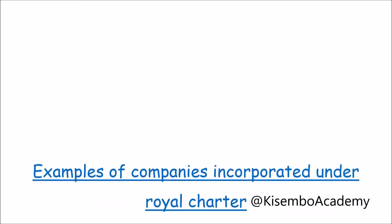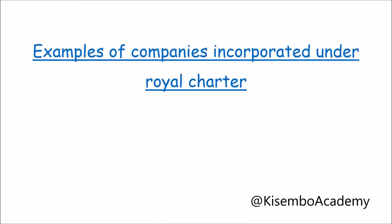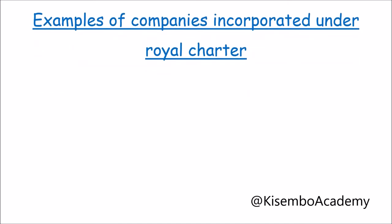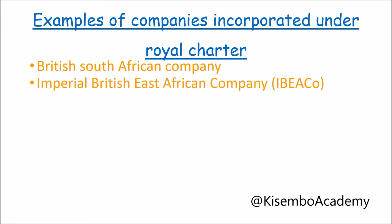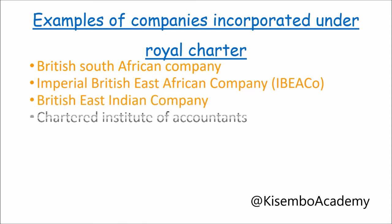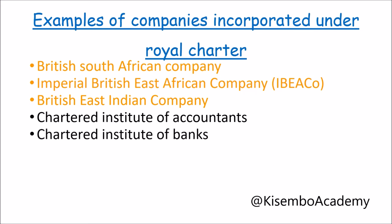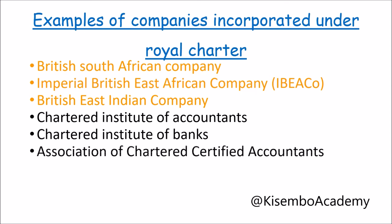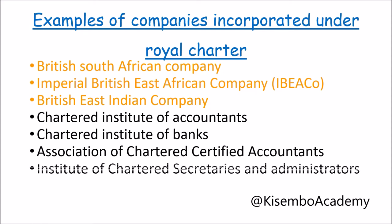Companies incorporated under the special or royal charter are companies, most of which existed in the United Kingdom under the permission of the Queen of England. They started in the early 1600s, and common examples include the British South African Company, the Imperial British East African Company, and the British East Indian Company. Those that exist today include the Chartered Institute of Accountants, the Chartered Institute of Bankers, the Association of Chartered Certified Accountants, and the Institute of Chartered Secretaries and Administrators.